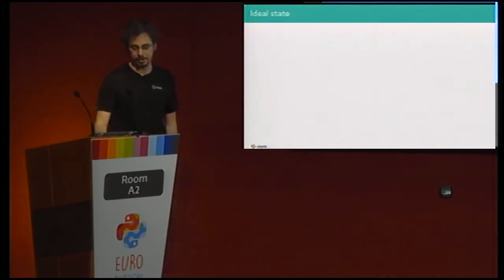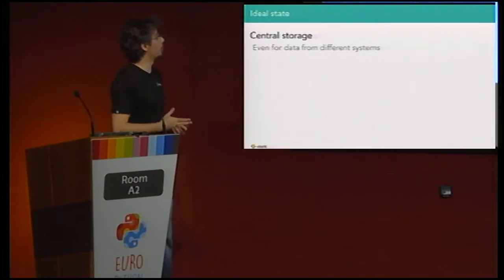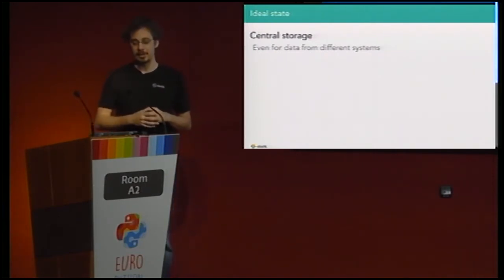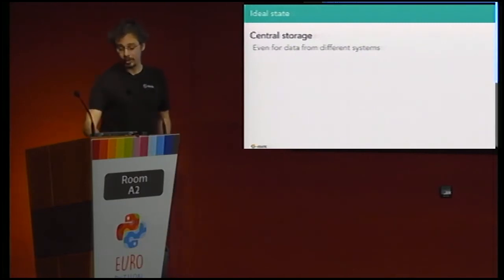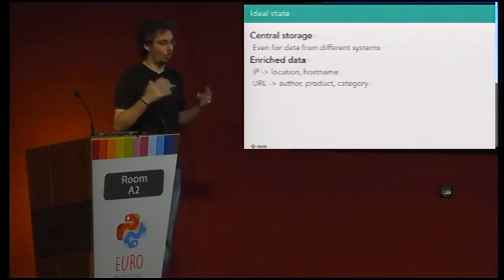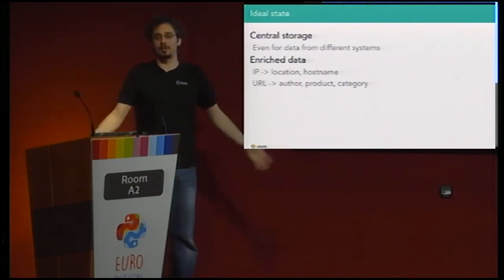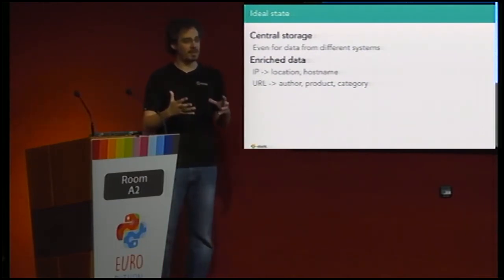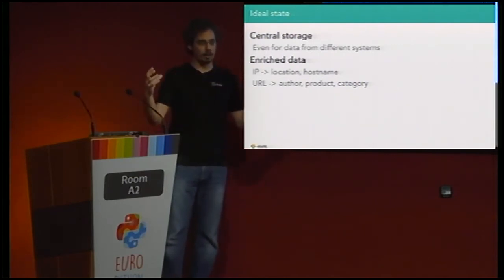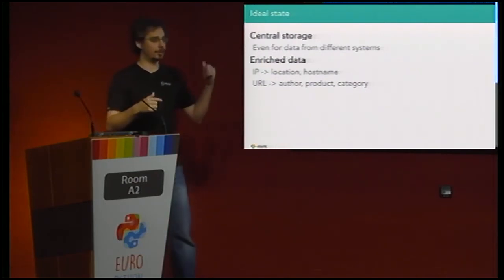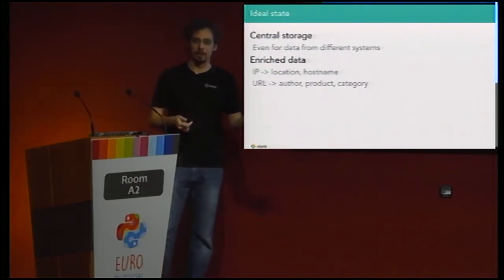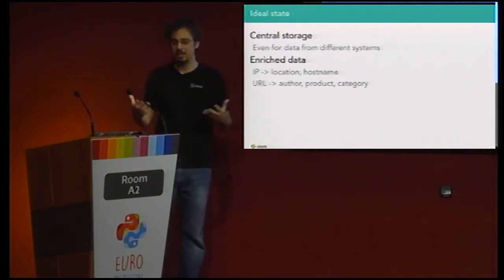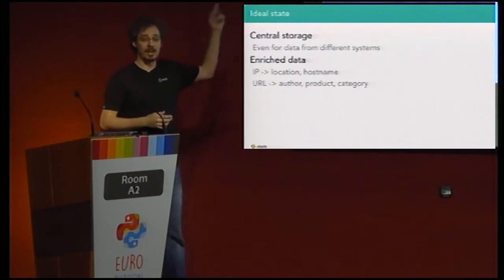So this is everything we want — to be able to look at what happened at Tuesday 3am and answer all these questions and do correlations. The ideal system needs a central storage that can handle different data from different sources in different amounts. We also need the data to be enriched — not just the raw text from the log. We want to parse it and do enriching: for example, map a URL to the article and author, or to the product and category in our e-shop.